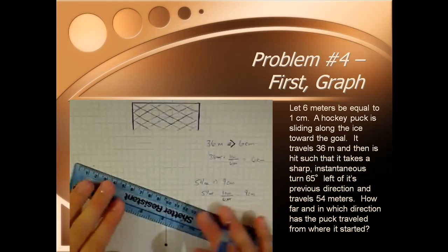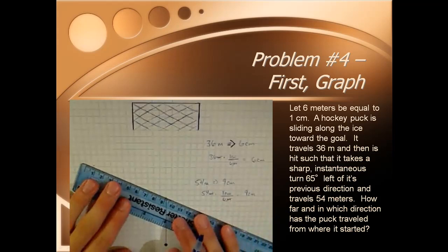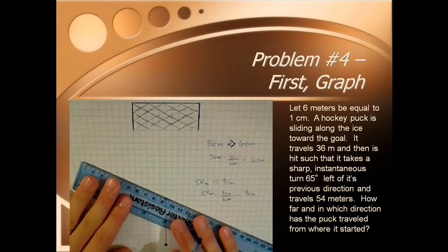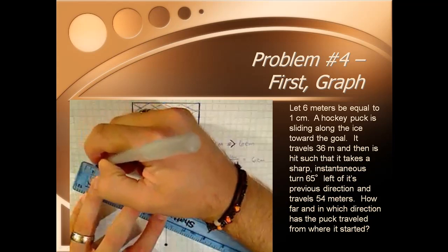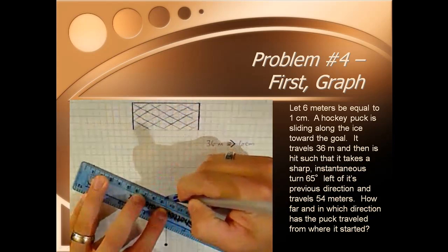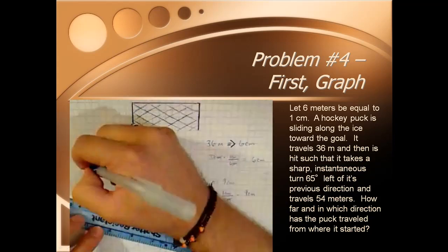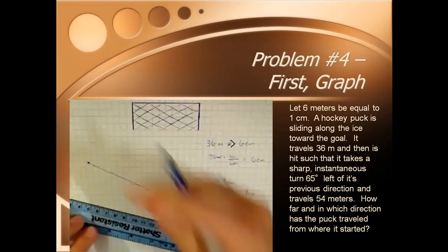Then I'm going to grab my ruler, and we want that to be 9 centimeters long. I'll line it up on my two points here, and I'll make it 9 centimeters long, like so. That is my final vector.